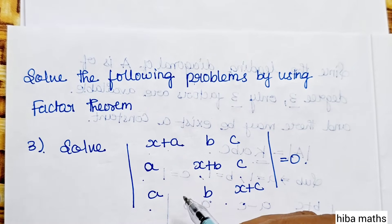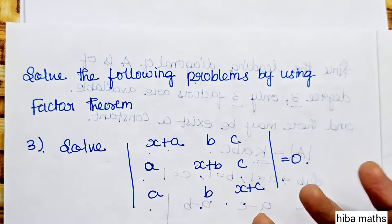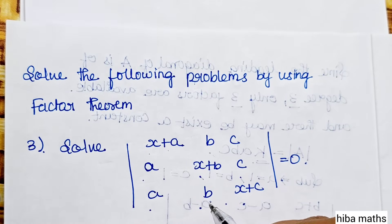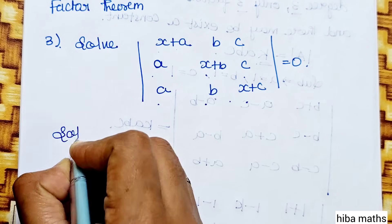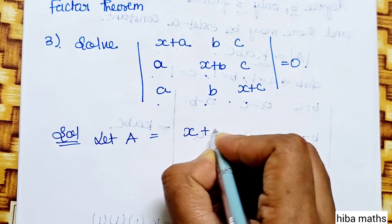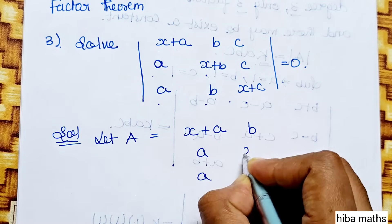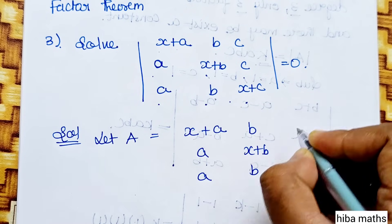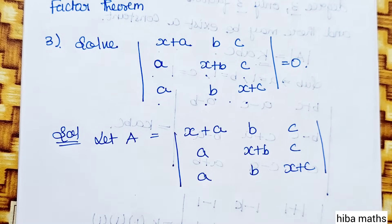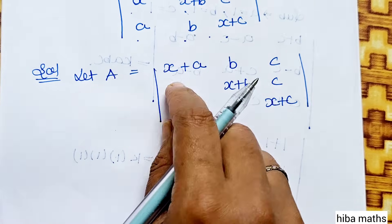What we need to do in this matrix is make X a factor. Let A be equal to the determinant with entries x plus a, a, b, x plus b, b — we need to find the factors of this matrix using the Factor Theorem.